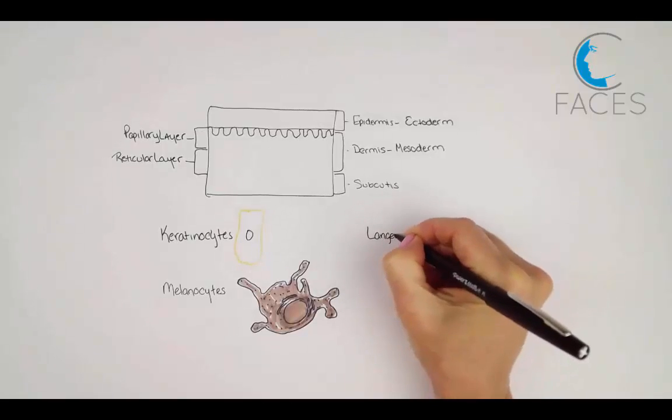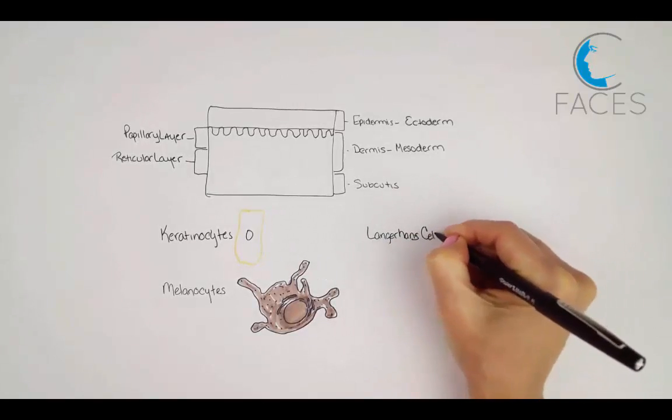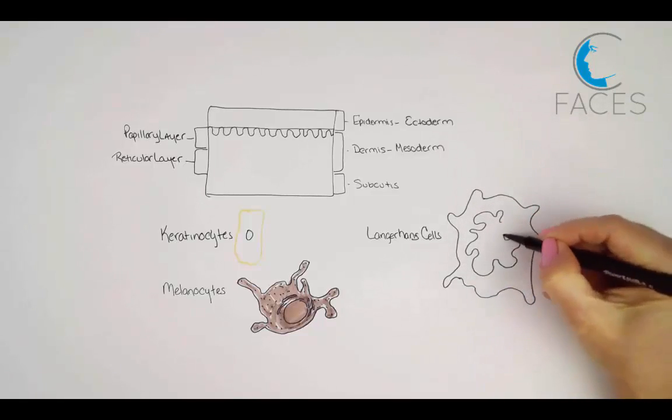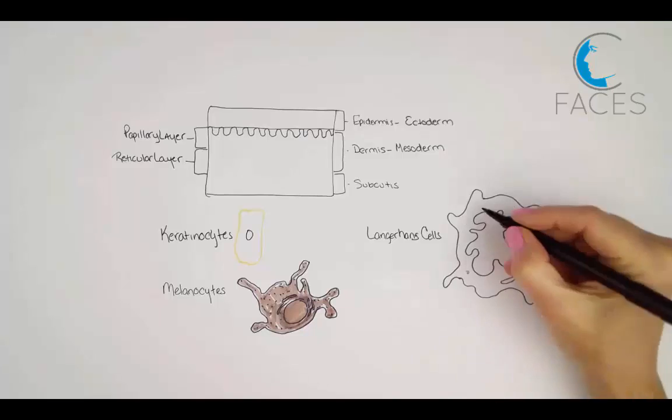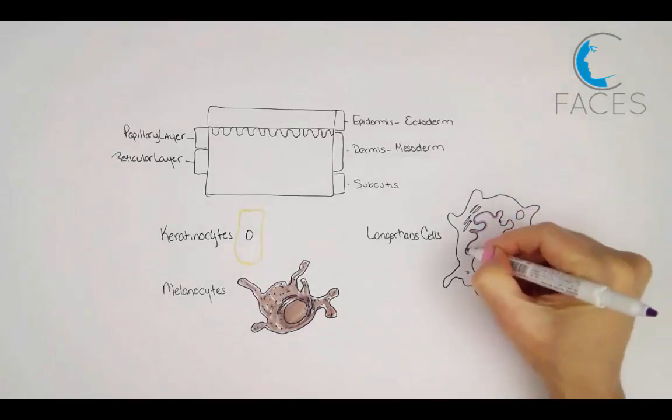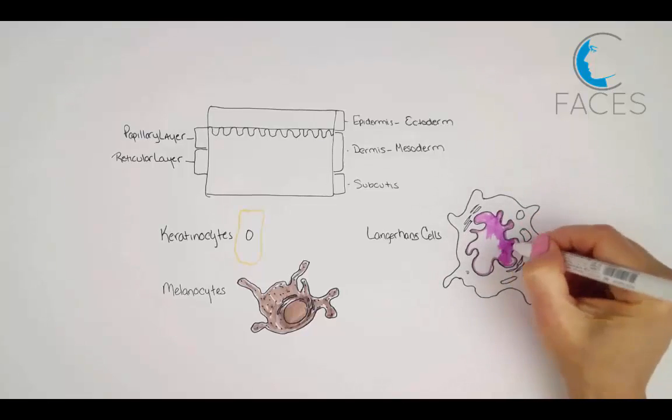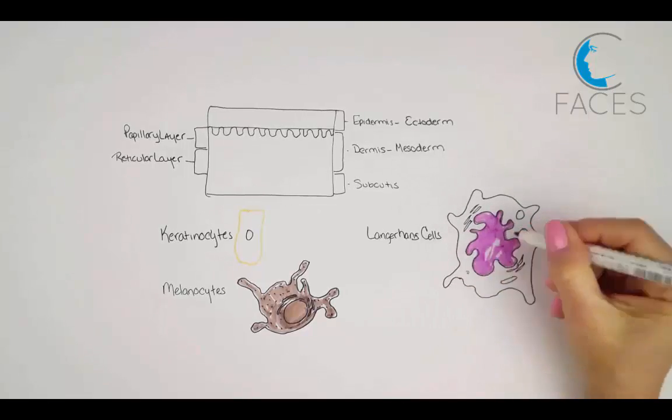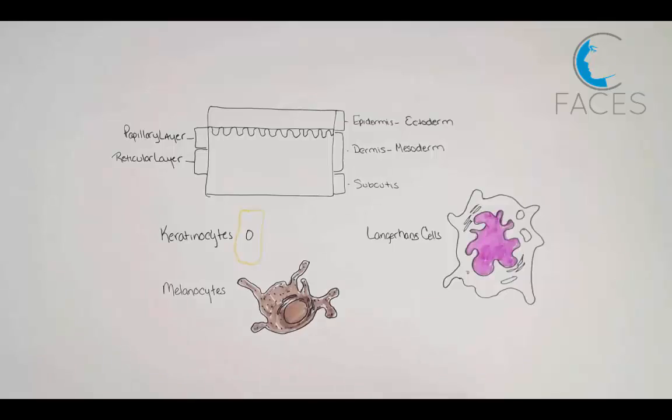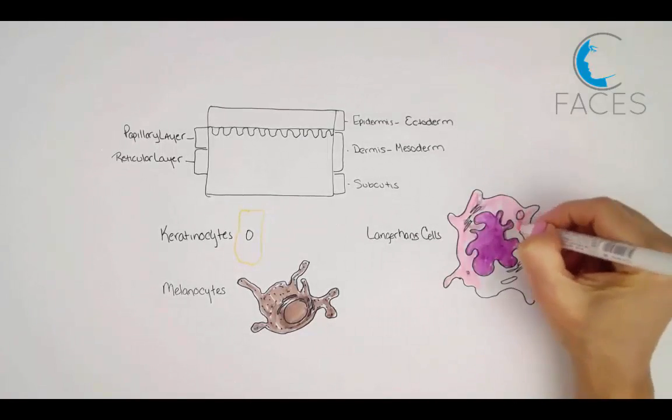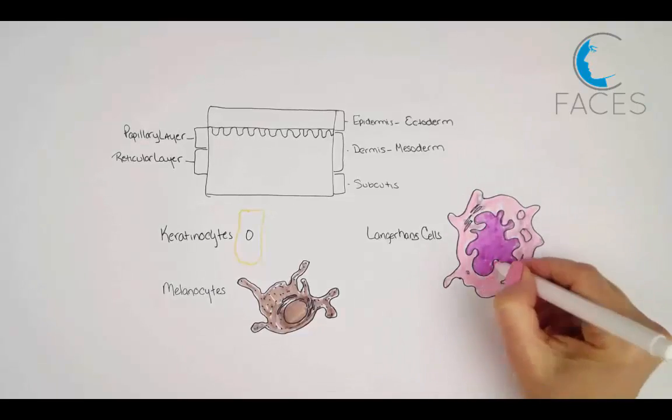Langerhans cells, which are antigen-presenting cells, have free, long, slender, and dendritic cytoplasmic processes that extend between keratinocytes much like the melanocytes. These cells play an important role in contact allergic responses and other cell-mediated immune reactions of the skin. These are the cells which mediate the immediate type 1 response in the now fairly common latex allergy.